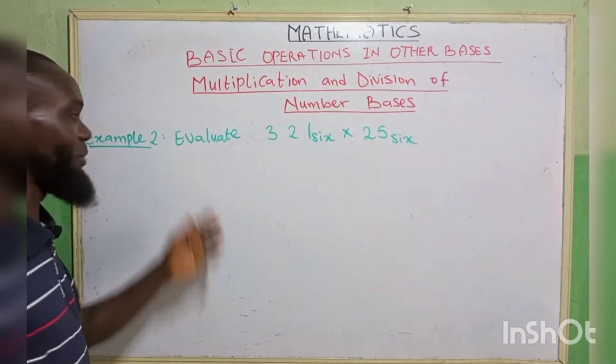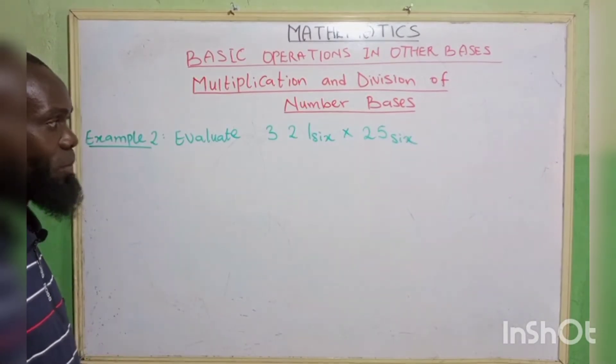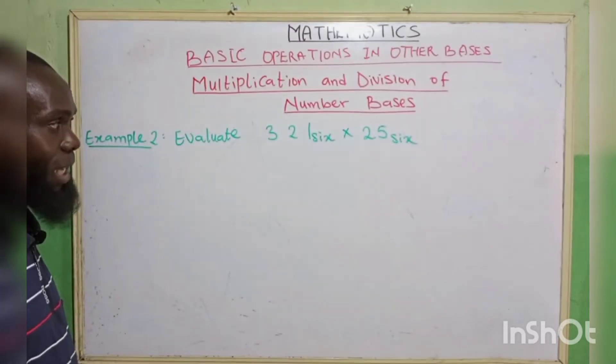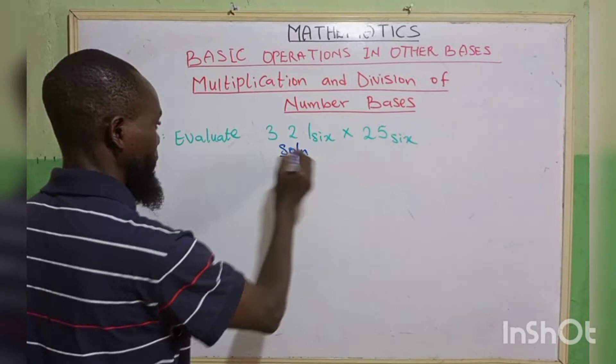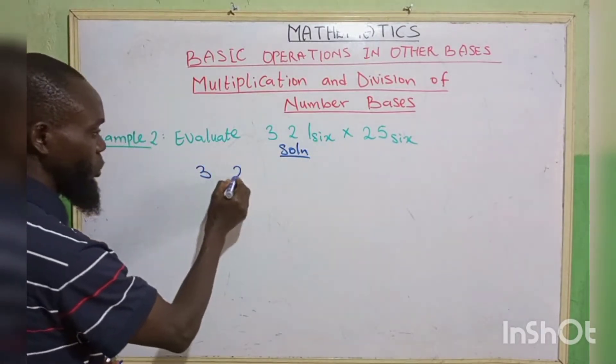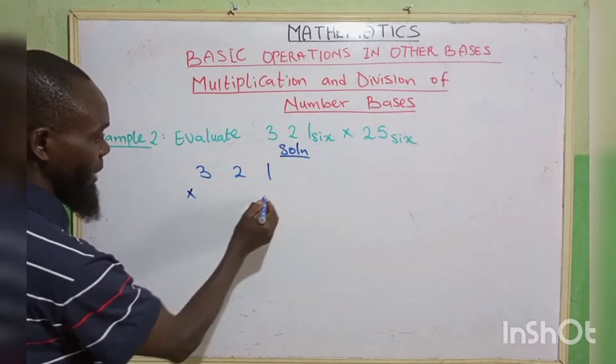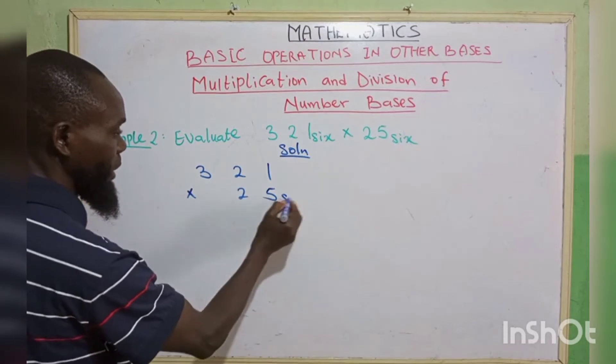Example 2: evaluate 321 base 6 multiply by 52 base 6.